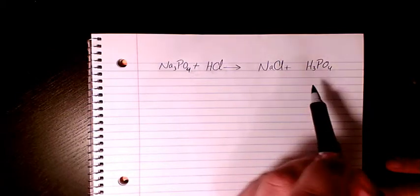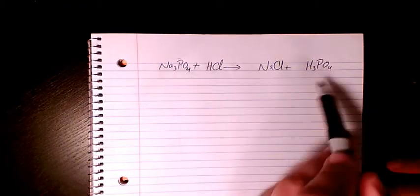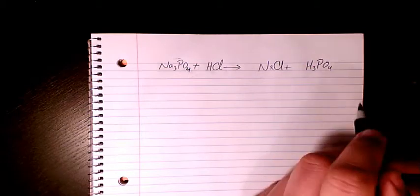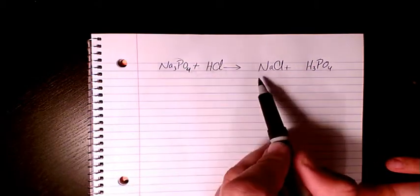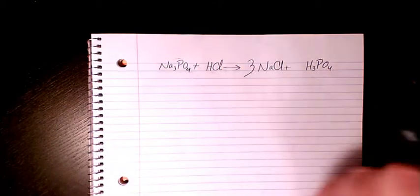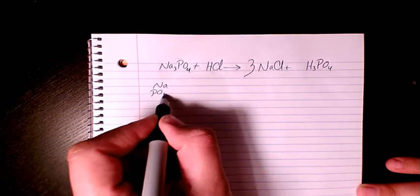So first of all, I start with phosphate. Balance here, balance here, so we have one from each side, so that's balanced already. Sodium in the reactant side, we have three of them, and in the product side we have just one, so just make three here. So sodium is balanced now, phosphate is balanced.